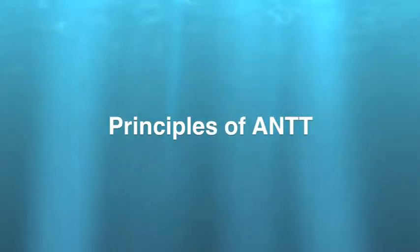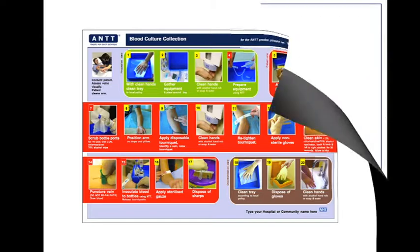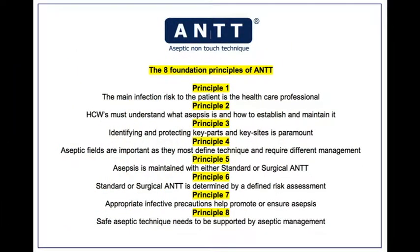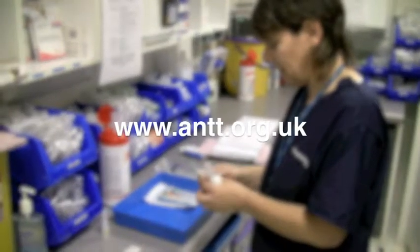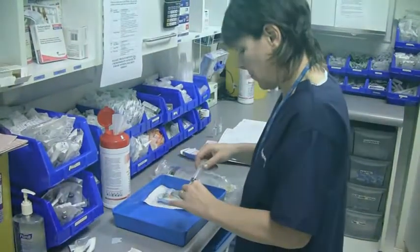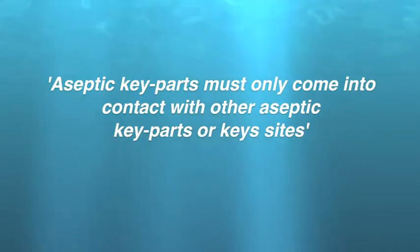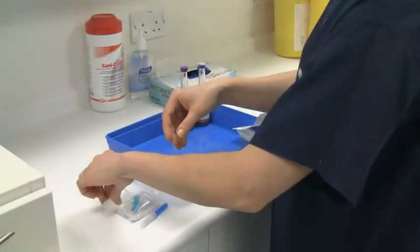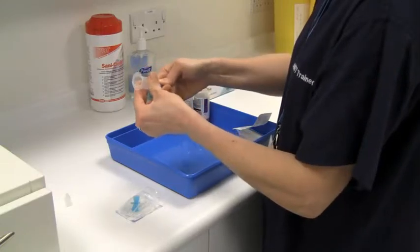All ANTT guidelines are based upon a practice framework that teaches eight foundation principles of safe aseptic practice. Healthcare workers using ANTT can view this framework online. The fundamental principle or rule of ANTT is simple: aseptic key parts must only come into contact with other aseptic key parts or key sites. To ensure this, the practitioner must identify and then protect at all times the key parts and key sites of any procedure.